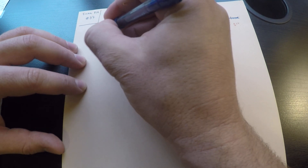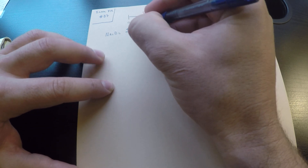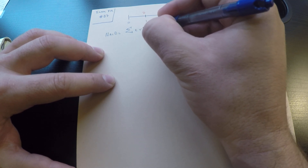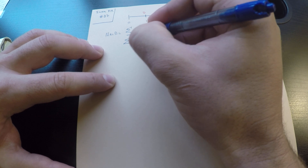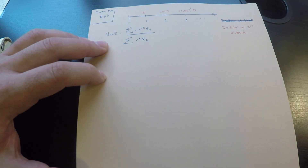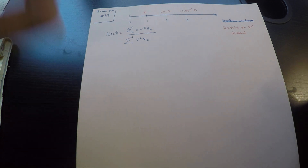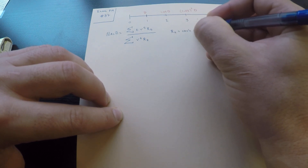We want to find the Macaulay duration. The formula for Macaulay duration is the sum of T times V^T times R_T, divided by the sum of V^T times R_T — that is, divided by the price. Here R_T is just the cash flow at time T.